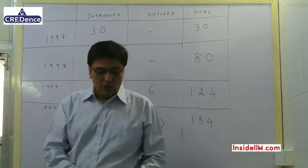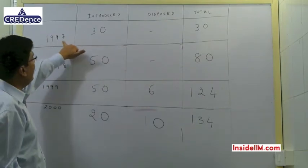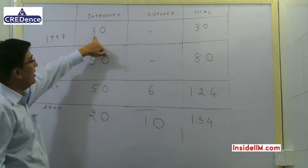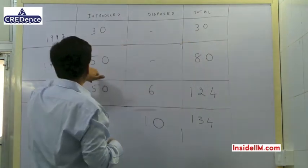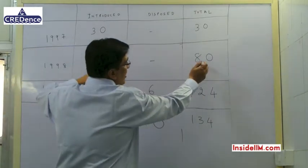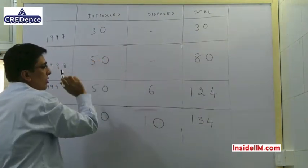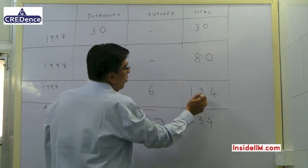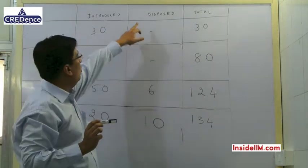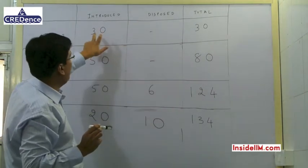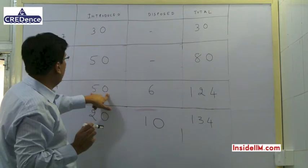For Purana Mixture Grinders, we do not have information from 1990 to 1994 — that information is missing. Let's look at the table I have created. In 1997, 30 Naya Mixture Grinders were introduced; nothing was disposed of, so the total is 30. In 1998, the total shown in the graph is 80, nothing was disposed of, meaning 50 were introduced. In 1999, there are 124 Mixture Grinders in total; 6 were disposed of — which is 20% of 30 — hence 50 Naya Mixture Grinders were introduced in 1999.